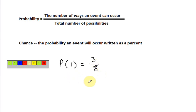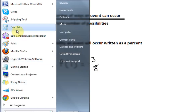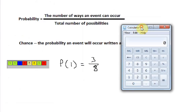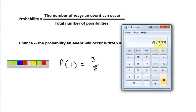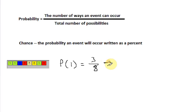Now the chance that we draw a one is this probability — three out of eight — written as a percent. If you remember how to write a fraction as a percent, I'm going to grab my calculator here. We're going to take three divided by eight to get our decimal, which is 0.375. To turn a decimal to a percent, we multiply that by 100, so it will be 37.5 percent.